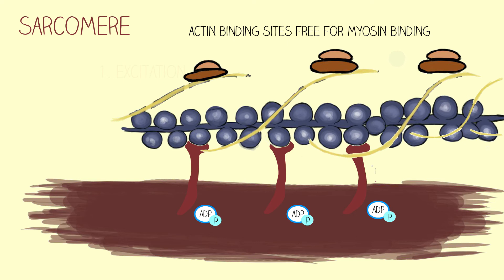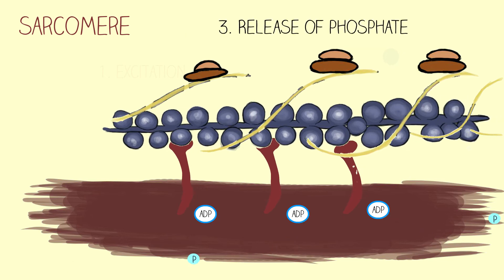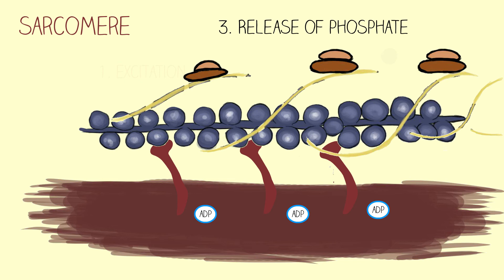The formation of the strong crossbridge between myosin and actin induces the third major aspect, or third trigger, which is the release of the free phosphate from the myosin heads. As a result, the myosin heads swing forward, the energy for which comes from the hydrolysis of ATP, thus moving the actin filaments towards the center of the sarcomere, or the M-line.